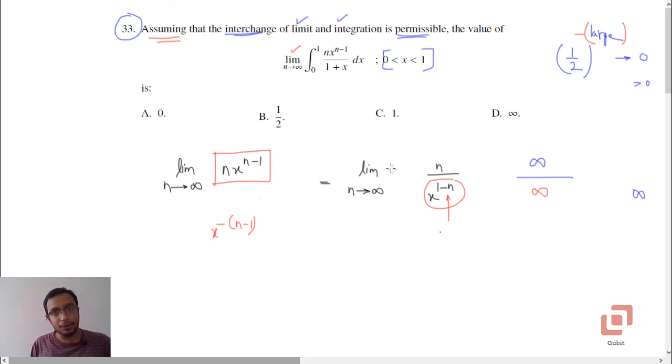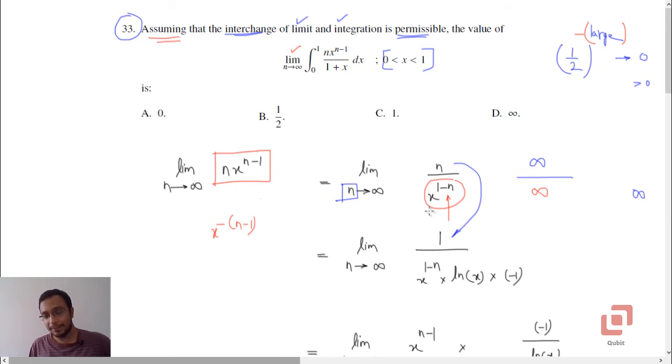But carefully note that we are not going to differentiate with respect to x, we are going to differentiate with respect to n. The derivative of n is 1, and for this you have to apply the a raised to x formula. So derivative of x raised to 1 minus n is x raised to 1 minus n times log x times the derivative of 1 minus n, which is negative 1.